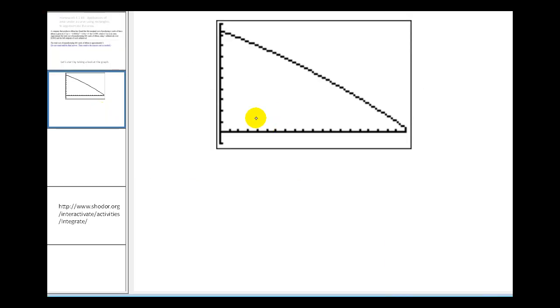First thing we need to do is figure out how wide our intervals are going to be. Remember the formula is b minus a divided by n, a and b being the intervals, so we have 800 minus zero over five intervals, or five rectangles, and the result will be a width of 160.